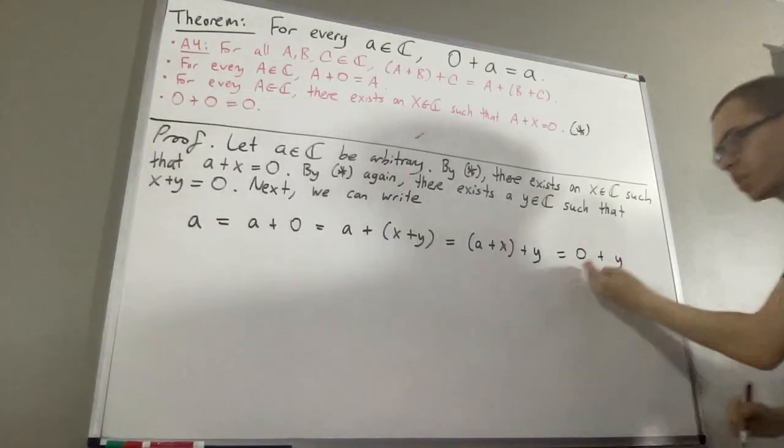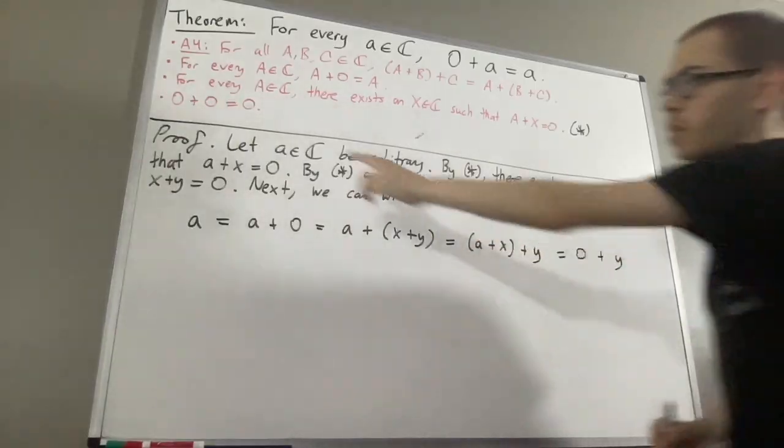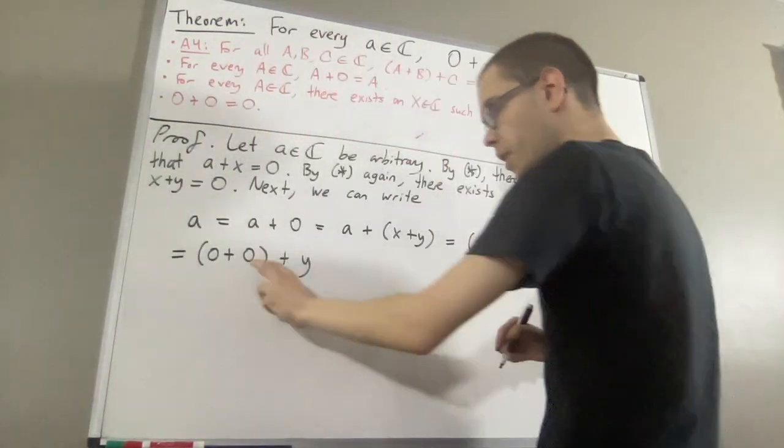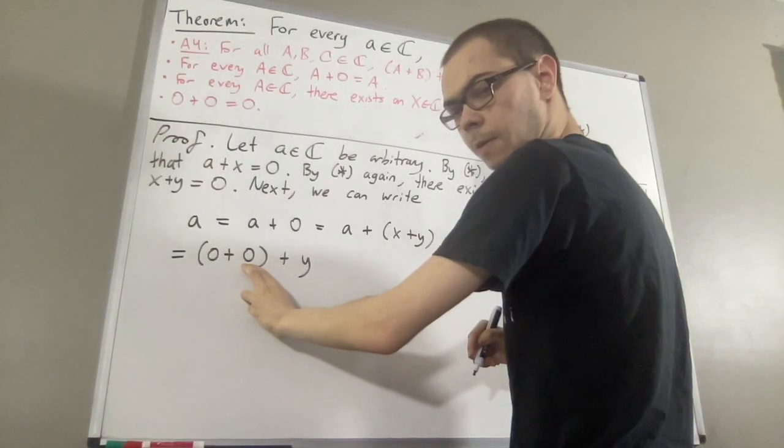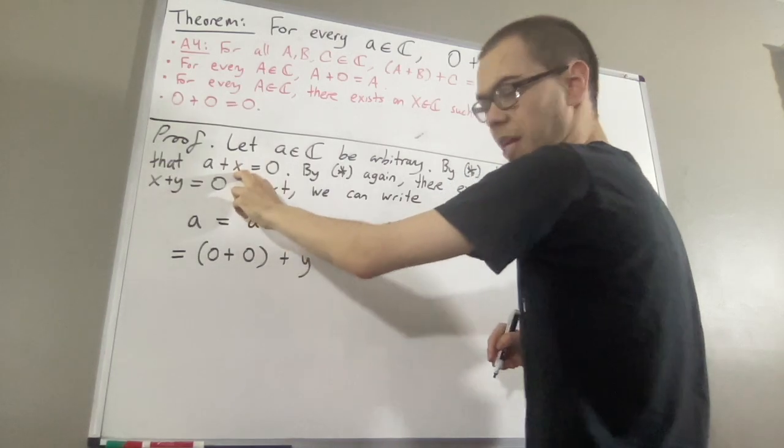Okay, so then what can we do from here? Well, the trick is, we replace 0 with 0 plus 0. And then if we replace this second 0 with a plus x, that should help us out.